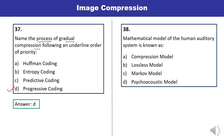Question 38: Mathematical model of human auditory system is known as — compression model, lossless model, Markov model, or psychoacoustic model? The mathematical model based on human auditory system is known as the psychoacoustic model. Answer is D.